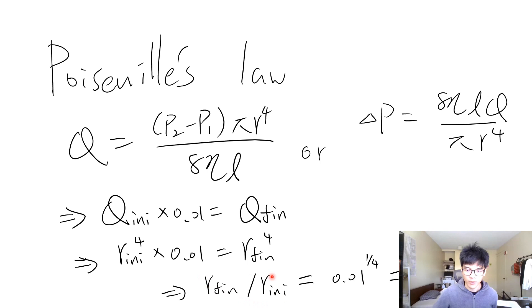So the last job is to get the ratio, right, this is what we are asked for. The ratio would be 0.01 to the one fourth, and this is 0.316.